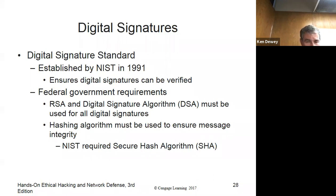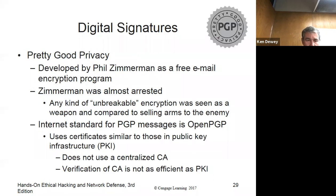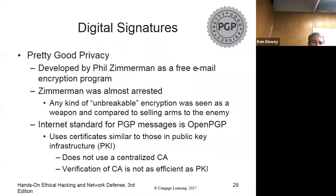DSS in 1991 ensures digital signatures can be verified. The government started using it with SHA — very popular. PGP is also used — it's a free email encryption program. There's also OpenPGP and GPG, the open-source version.